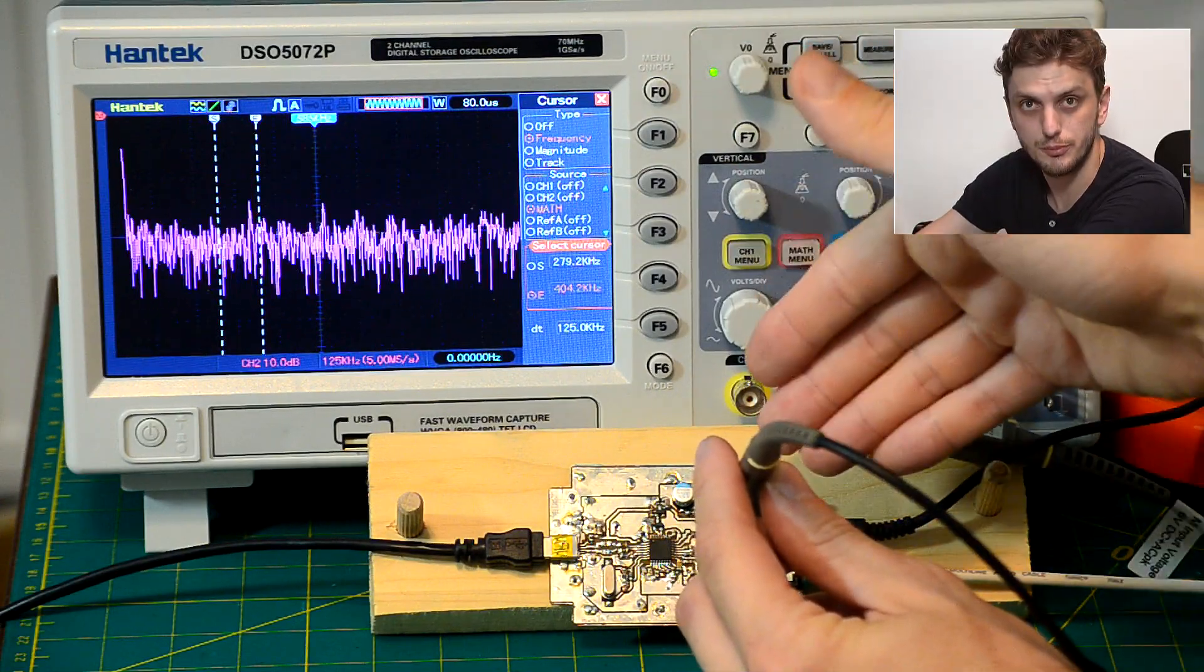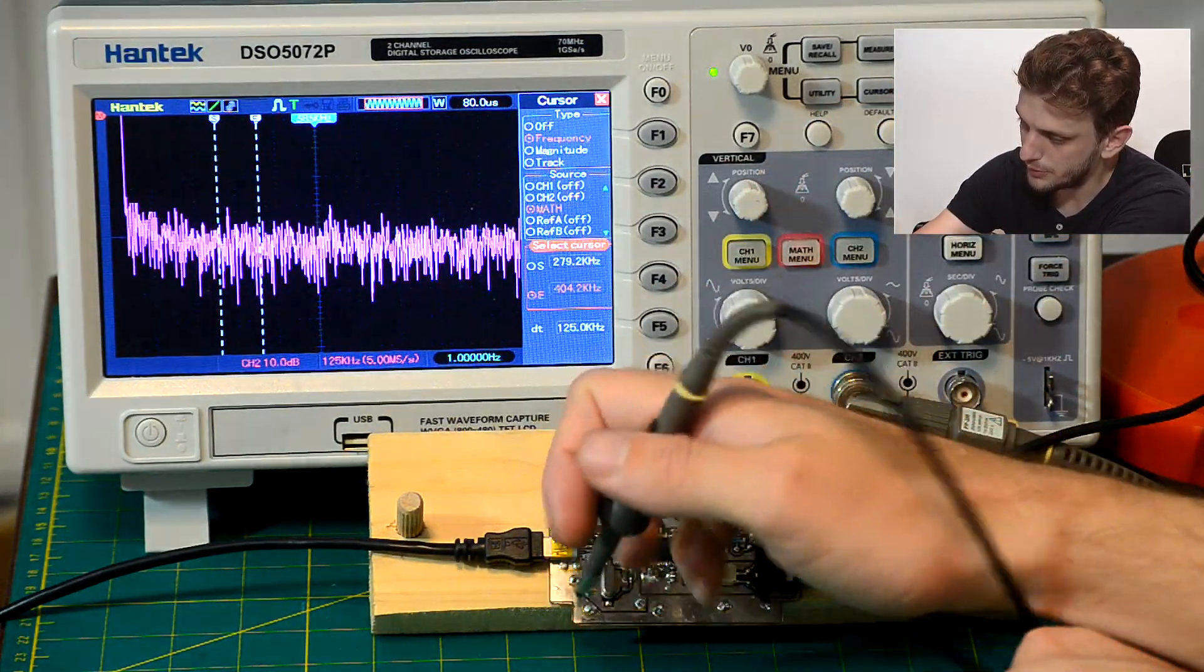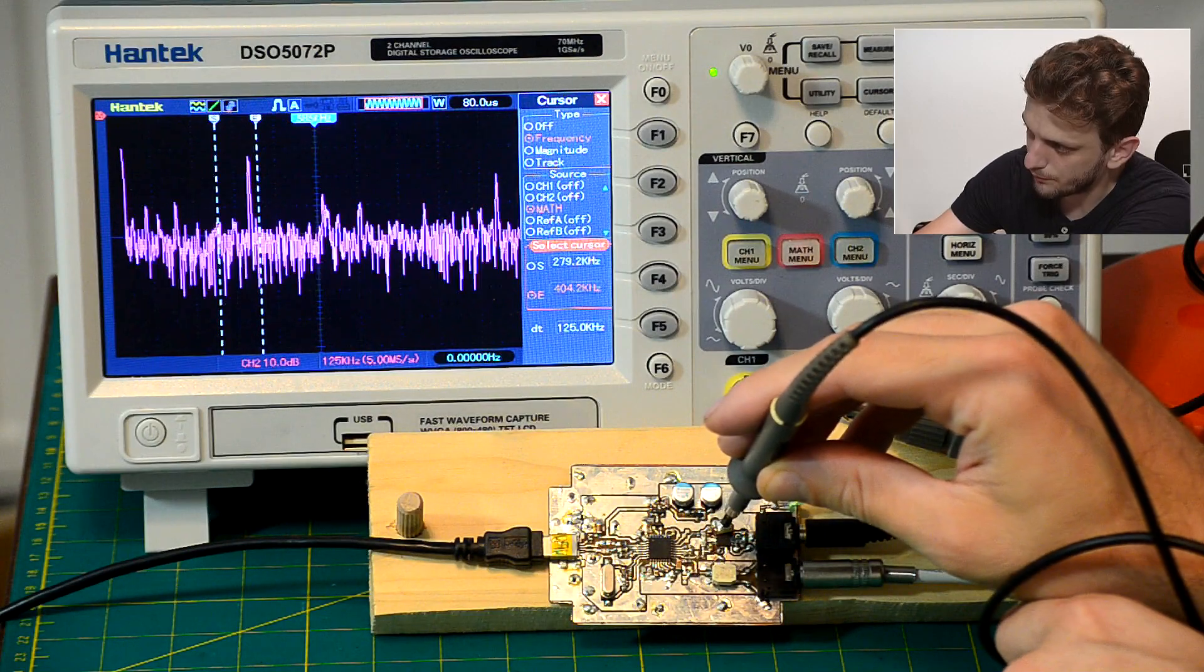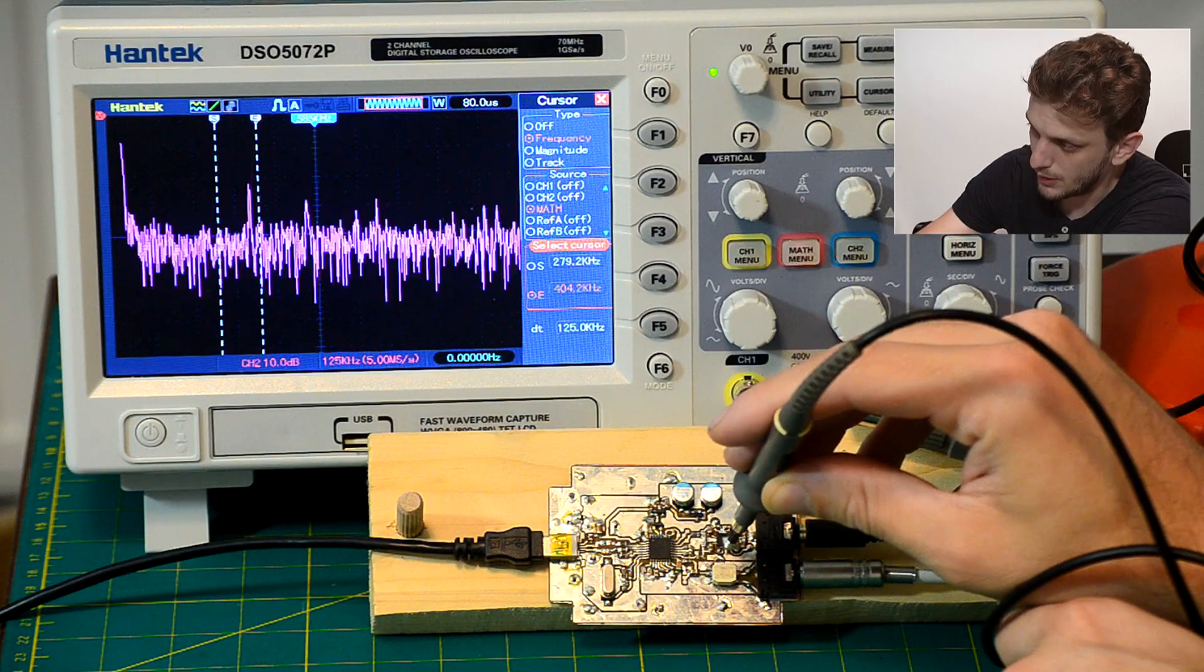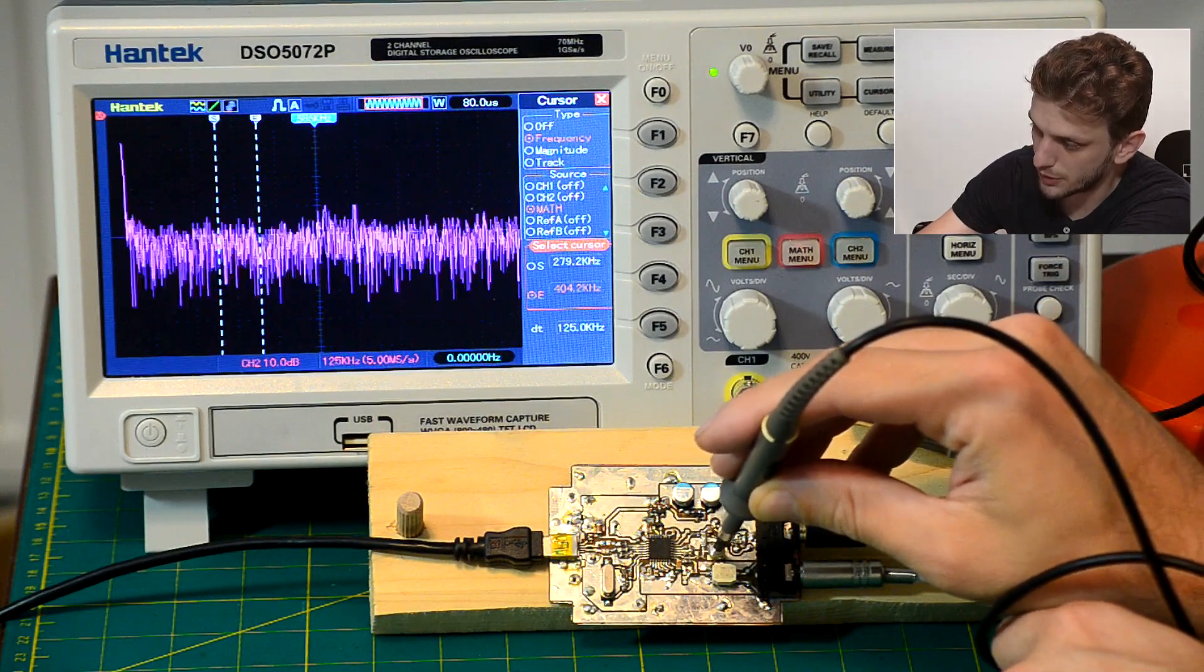So this is probably the charge pump from the IC. If I take my smaller probe tip now and look around the IC, we can see that on its upper right side the spike is much much higher, but if I move to the underside then the spike is no longer present.